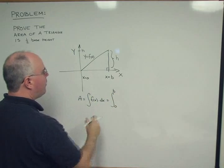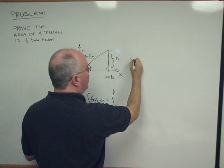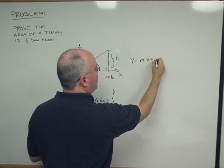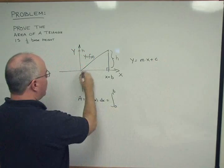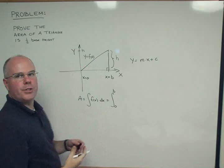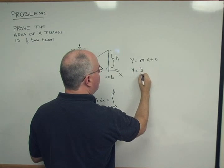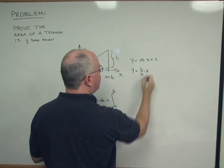What's our function? Well our function is just a straight line. Y equals m times x plus some constant. In this case because we're passing through the origin there is no constant. So y is equal to h over b times x.